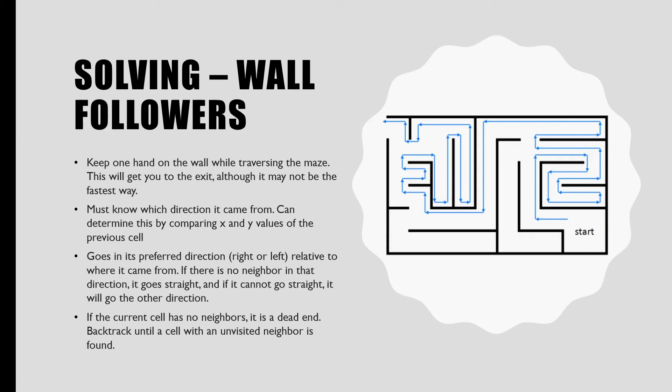From there, we go in the direction of the wall we are following relative to where we came from. If there is no neighbor in that direction, then we go straight, and if we cannot go straight, we go in the direction of the wall we are not following.